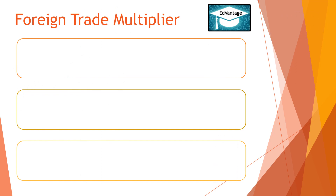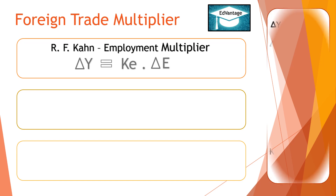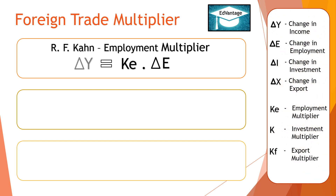Introduction of Foreign Trade Multiplier: The original idea of multiplier was given by R.F. Kahn, which was known as the Employment Multiplier. The concept of multiplier shows to what extent a change in one thing brings about a change in another thing. The Employment Multiplier studies the effect of change in employment on changes in income. Algebraically, Change in Y equals Employment Multiplier into Change in Employment.